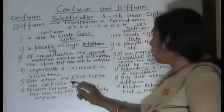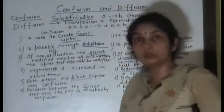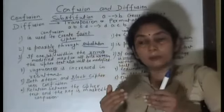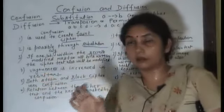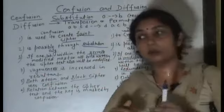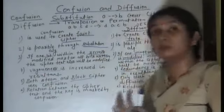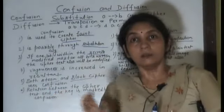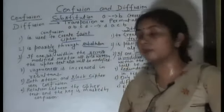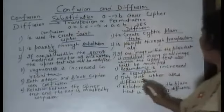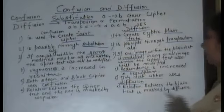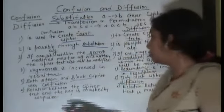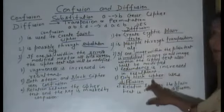Stream cipher and block cipher — which one uses confusion? Block cipher converts data block by block, and the block size should be 64 bits or more. Stream cipher processes plain text in 8 bits at a time. Both stream cipher and block cipher use confusion. But block cipher also uses diffusion — diffusion uses only block cipher, not stream cipher.